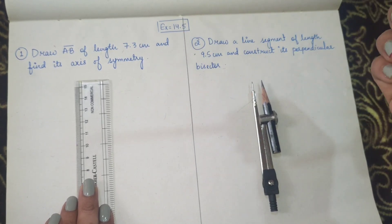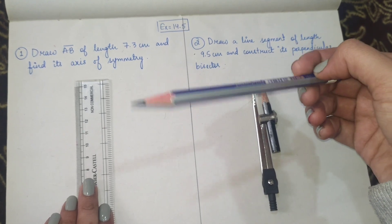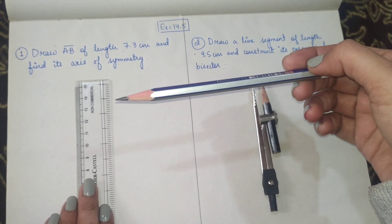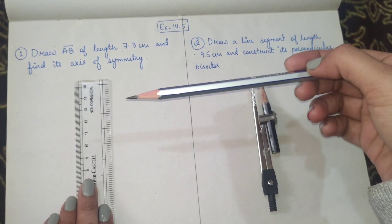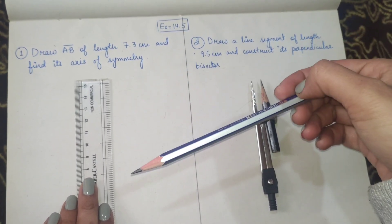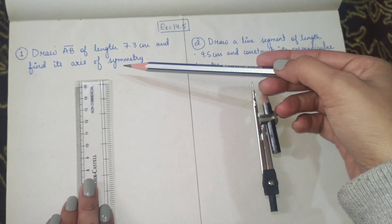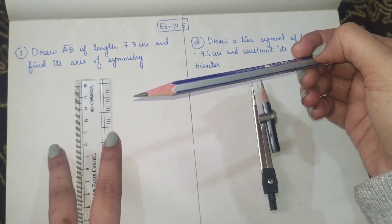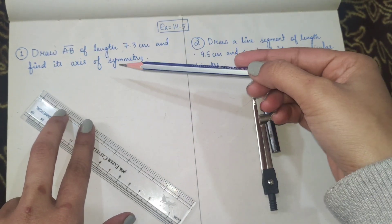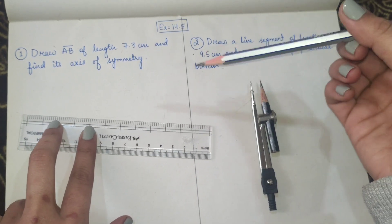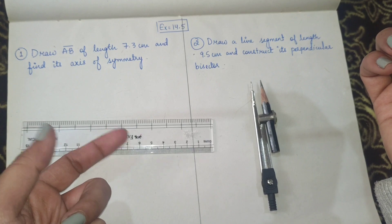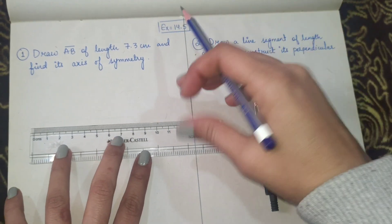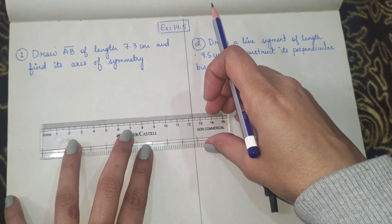Like in previous exercises we studied how to draw perpendicular to a given line. Now we'll be drawing a perpendicular bisector - a line which will be perpendicular to the given line as well as bisect it into two equal parts. That's what symmetry means - you get the same things on both sides. So first we'll draw a line segment of length 7.3 centimeters.